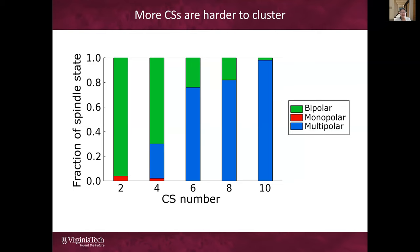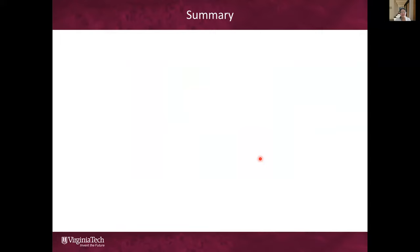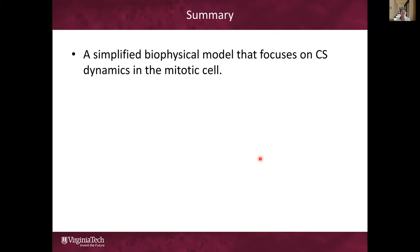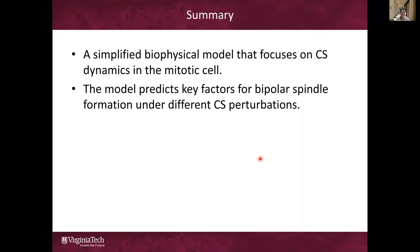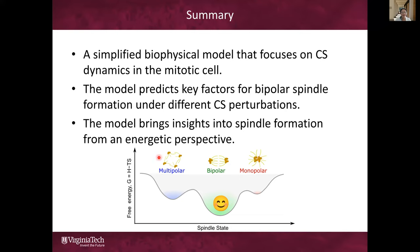The reason more centrosomes are harder to cluster in the model is because there are many more specific configurations the multipolar spindle state can take when centrosome number is large. When the centrosome number is large, the entropy associated with the multipolar spindle is higher, corresponding to a lower free energy. In summary, we constructed a simplified biophysical model focusing on centrosome dynamics in mitotic cells, using potential energy to characterize movement. The model can predict key factors for bipolar spindle formation under different centrosome perturbations, explaining how a spindle can both cluster and separate centrosomes as needed, providing insight into spindle formation from an energetic perspective.